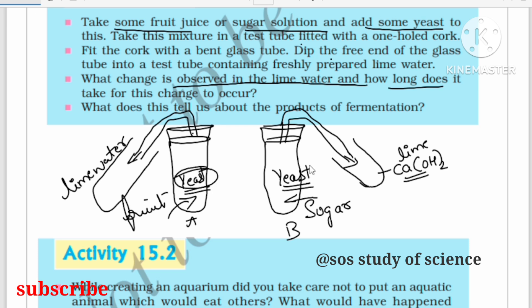Yeast, being a unicellular organism, lives on organic food such as fruit juice, sugar, or flour. It breaks down these food materials and releases carbon dioxide in both cases. This process is fermentation — an example of anaerobic respiration, which occurs in the absence of oxygen.